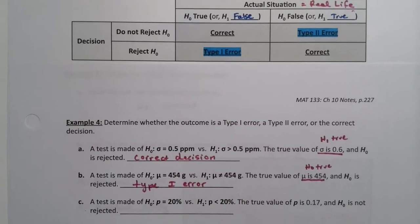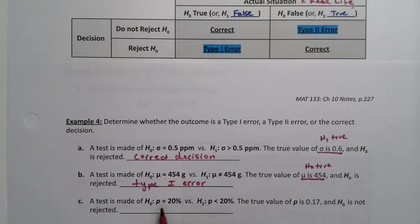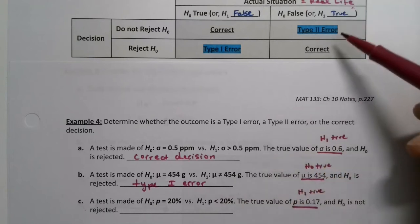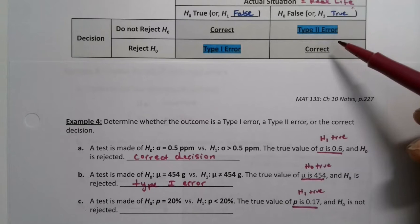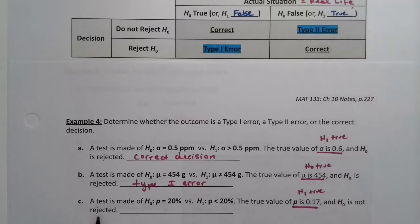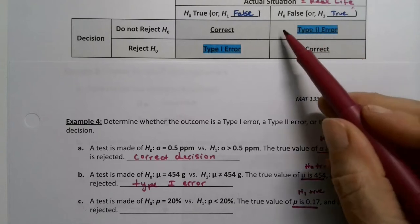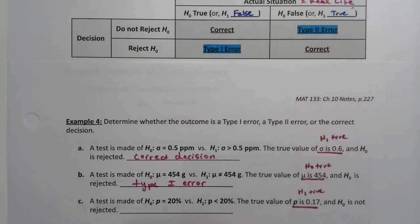All right, last one. So my H₀ is that p = 20%, H₁ is that p < 20%. If p is really 0.17, that's the population proportion. 0.17 is less than 20%, so that means that H₁ is true, which means I'm over on the right-hand side of the column again. If H₁ is really true but then I do not reject H₀, I let H₀ stand but H₁ is the one that's true, I've made a Type 2 error.